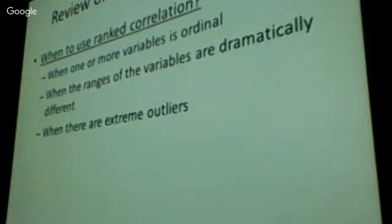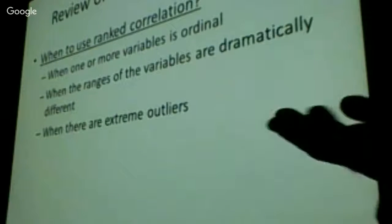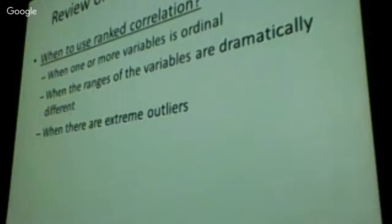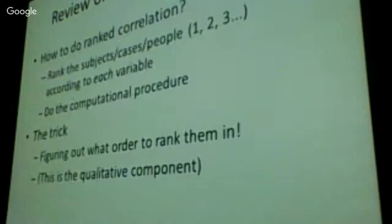We measure it when one of our variables is ordinal, or the ranges are really dramatically different. What does dramatically different mean? It depends who you ask. Just keep in mind that these are extremes. Looking at, I can't think of anything, IQ score, probably ranging from anywhere between 100 to 140 in a given population.